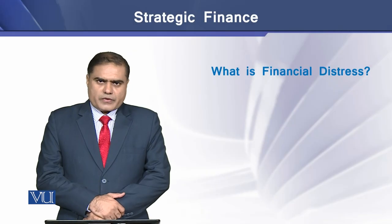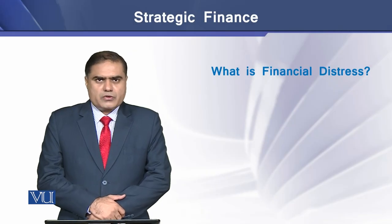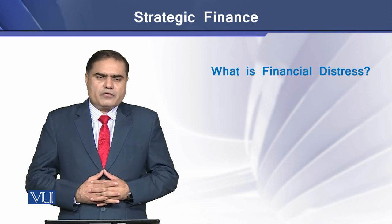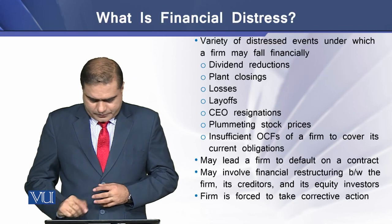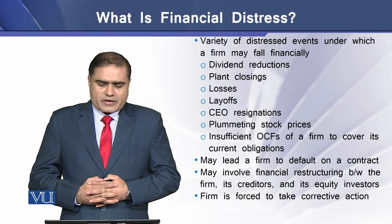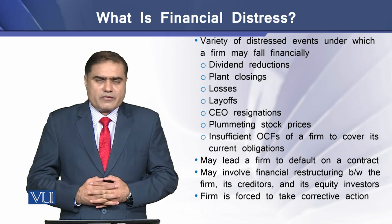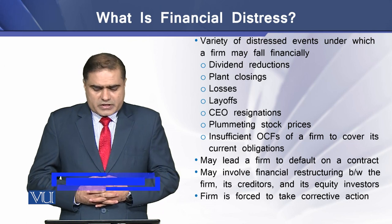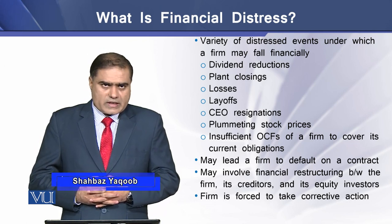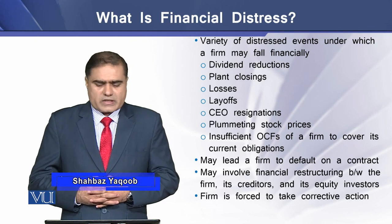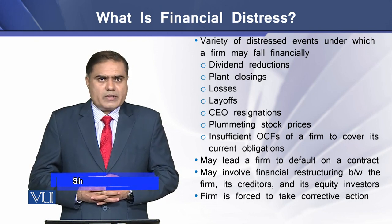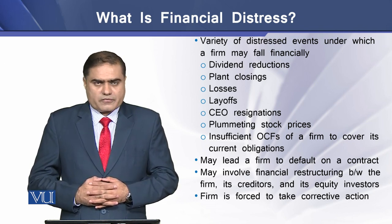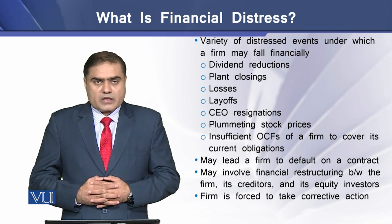A firm with insufficient cash to make its contractual payments is said to be a financially distressed firm. There are a variety of distressed events under which a firm may fall financially, like dividend reductions, plant closures, losses and layoffs, CEO resignations, falling stock prices, or insufficient operating cash flows of the firm to cover its current obligations.